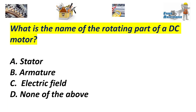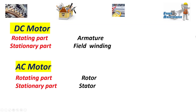What is the name of the rotating part of a DC motor? A. Stator. B. Armature. C. Electric field. D. None of the above. Answer: B. Armature. Note: For DC motors, the rotating part is the armature and the stationary part is the field windings. For AC motors, the rotating part is the rotor and the stationary part is the stator.